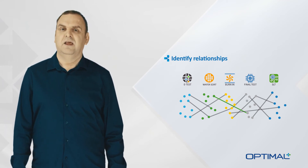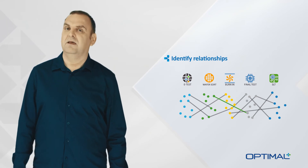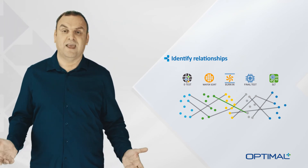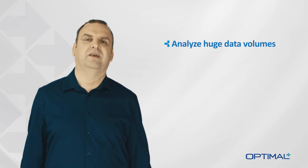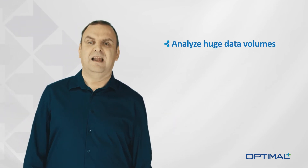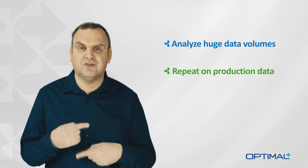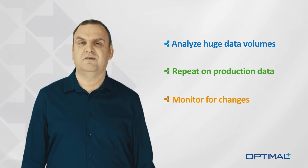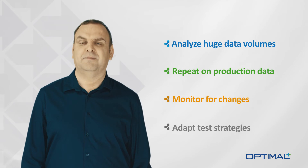Alternatively, if the correlation is extremely high, you can use this information to skip downstream tests altogether. However, in order to do any of this, the initial analysis needs to be performed on huge volumes of data, and then the analysis needs to be repeated on production data on a continual basis to monitor for subtle changes and adapt the test strategy automatically.